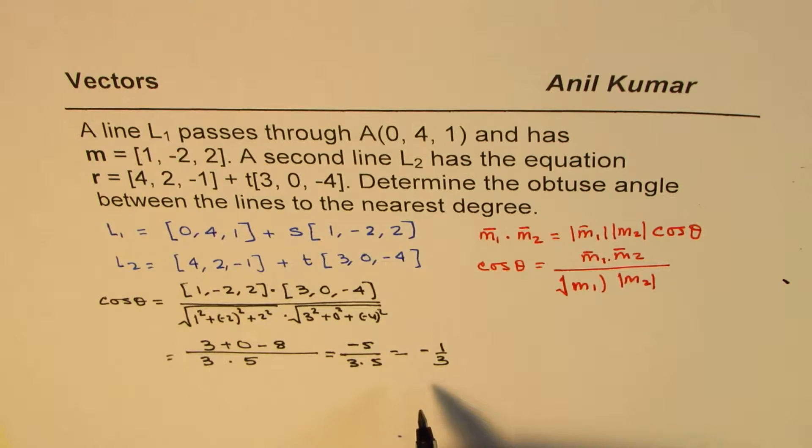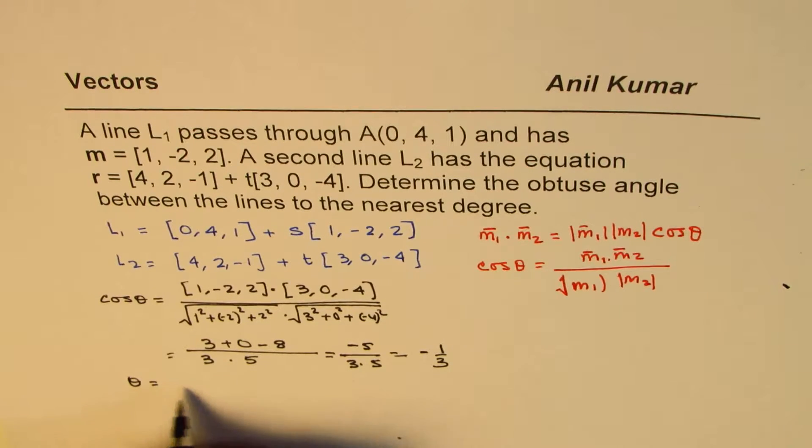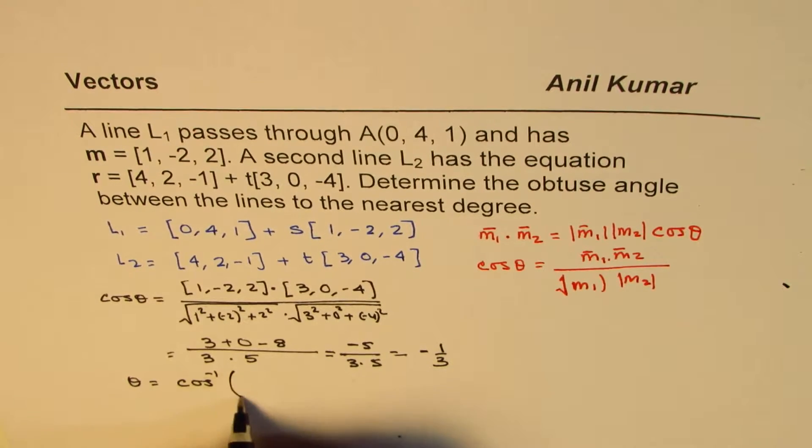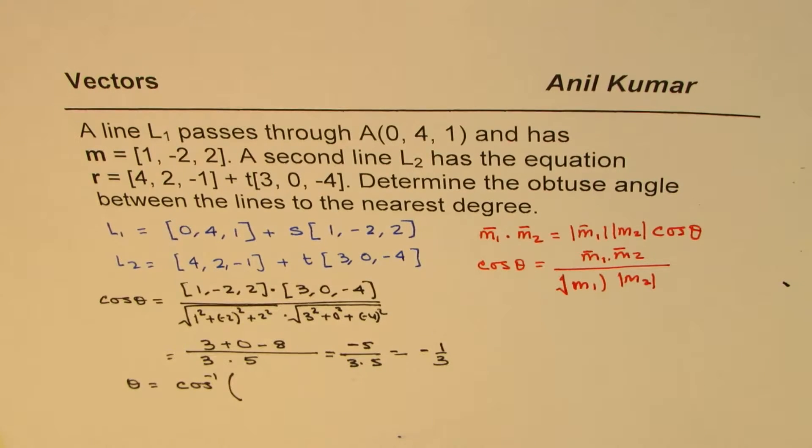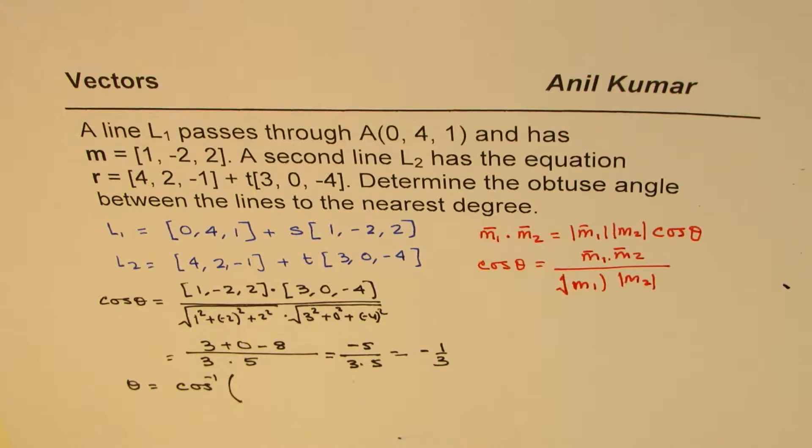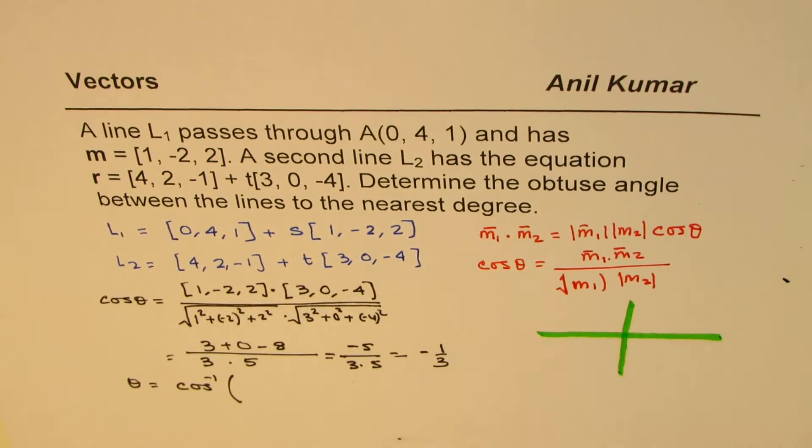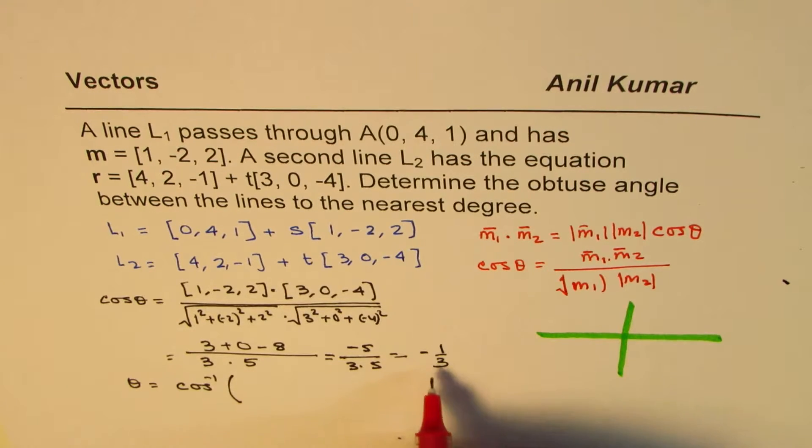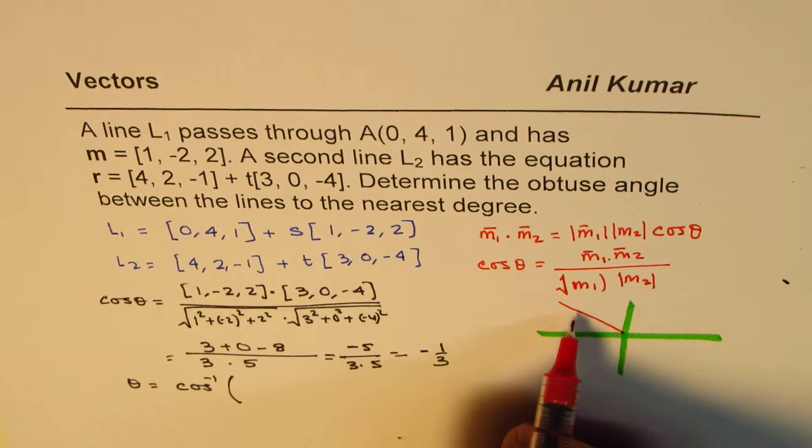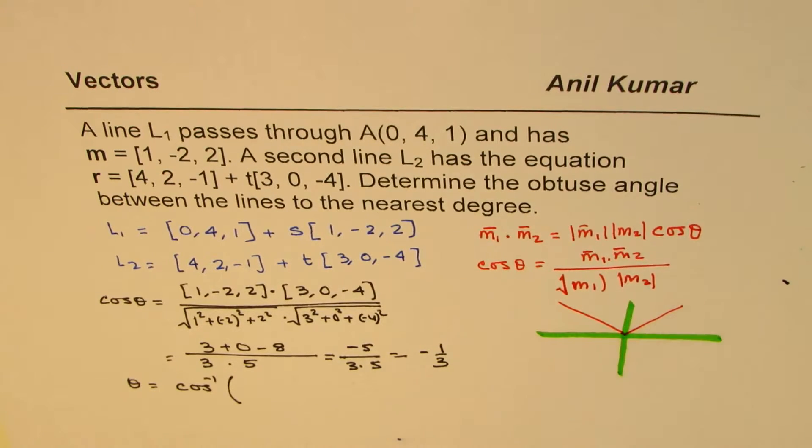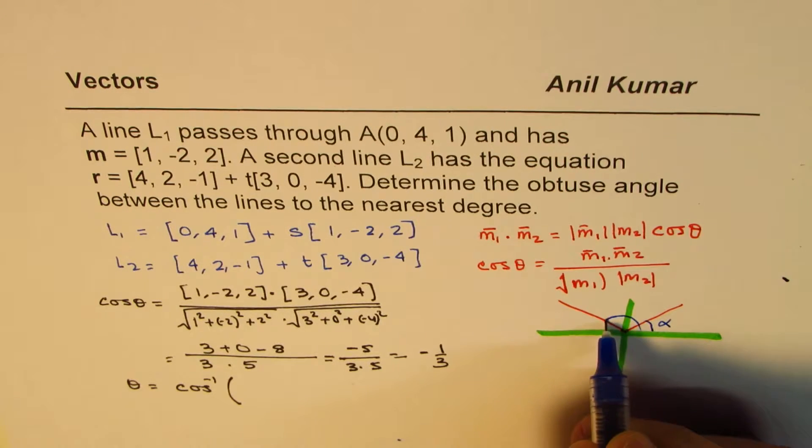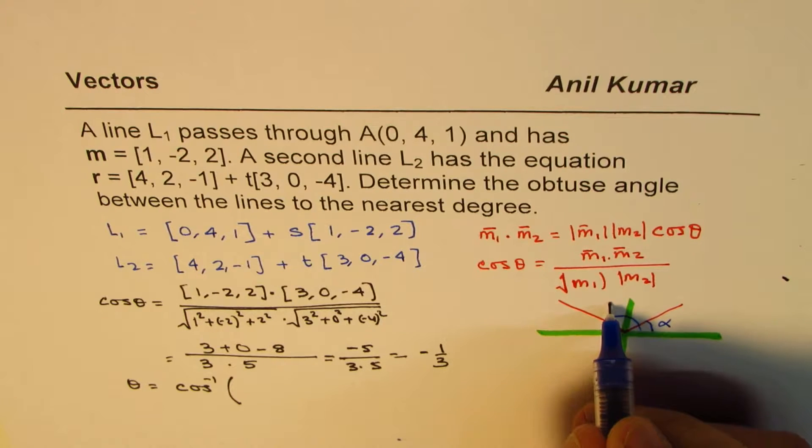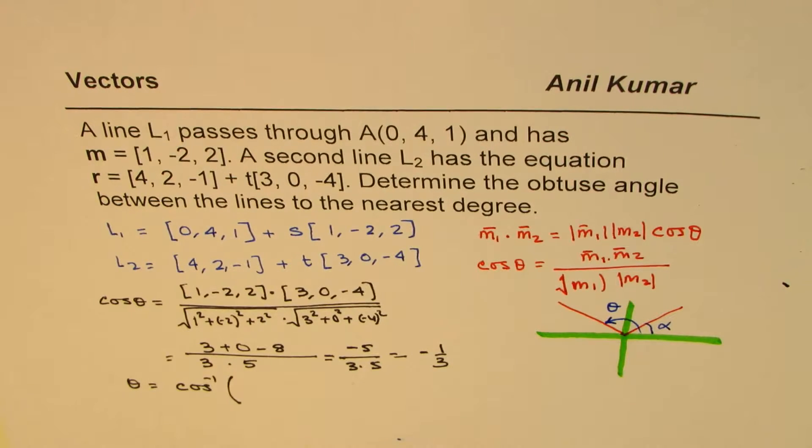So cos of minus 1 over 3. So we can actually now find the angle theta as equals to cos inverse. We can do minus 1 over 3 also. But as you know, cos is negative in quadrant 2. So let me just sketch this here for you. When we talk about minus 1 over 3, that means we are in quadrant 2. So what we will do here is we can find the related acute angle.